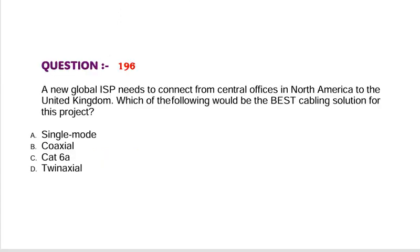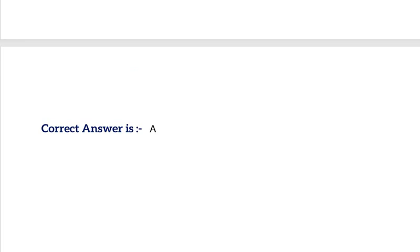Question: A new global ISP needs to connect from central offices in North America to the United Kingdom. Which of the following would be the best cabling solution for this project? Option A, single mode. Option B, coaxial. Option C, Cat 6A. Option D, twin axial. Correct answer is Option A.